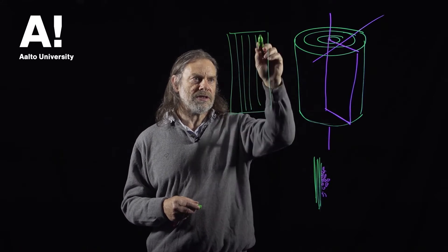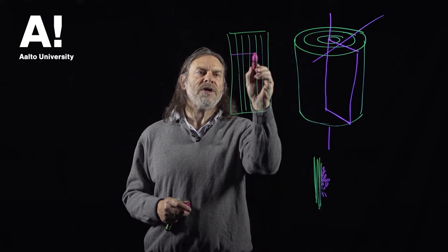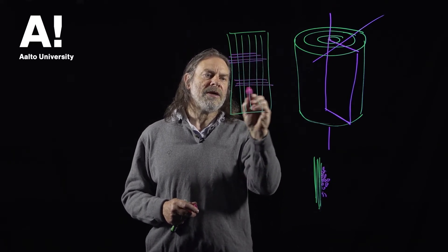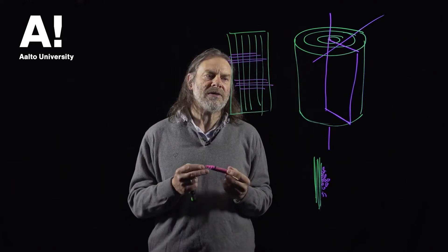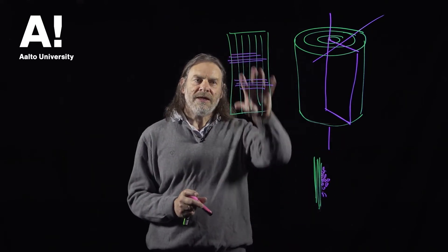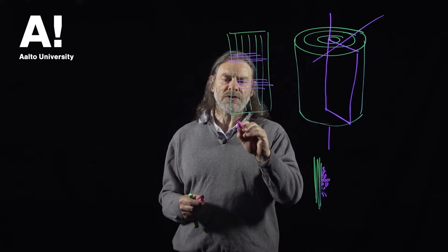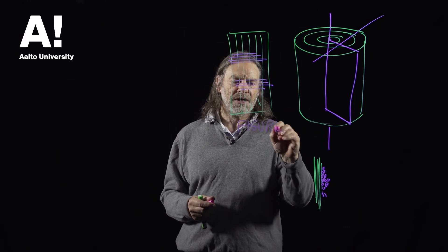We still have the growth rings running in this direction, but much more visible now will be the rays running through, and they may run all the way through the section or they may kind of wiggle in and out. But you're much more likely to hit the rays because these bundles are so big, and this can give very attractive appearance to the wood and it's quite often referred to as the figure of wood.